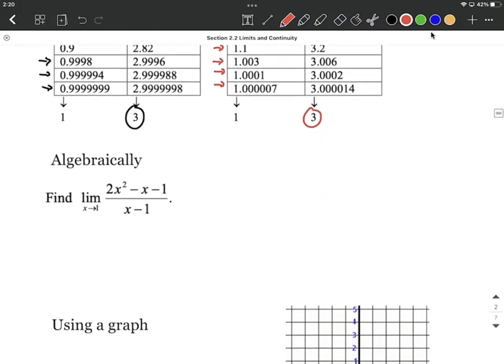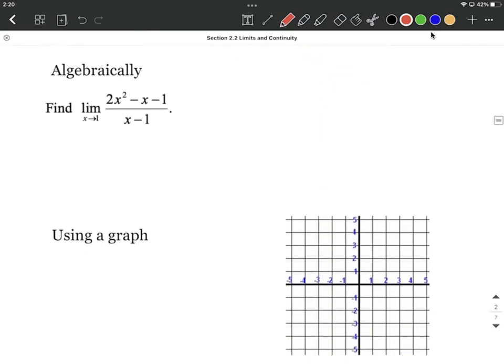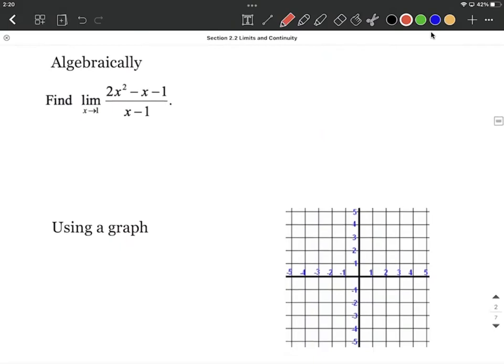Another way we could do this is we could do this algebraically, so it's the exact same function. To algebraically do this, what we want to do is we know we can't plug in 1, replace each one of the x's with 1, or else we would get a 0 in our denominator. Instead, what we want to do is think about factoring the numerator. So in this case, our numerator is going to factor as x minus 1 and 2x plus 1. You could use whichever method you're comfortable with to factor that, but it should work out that way.